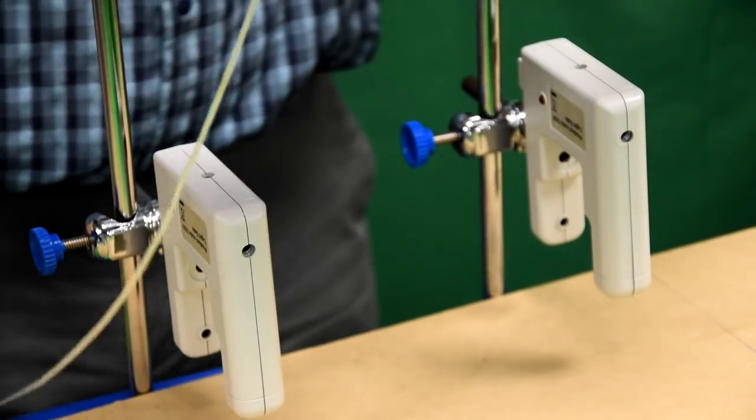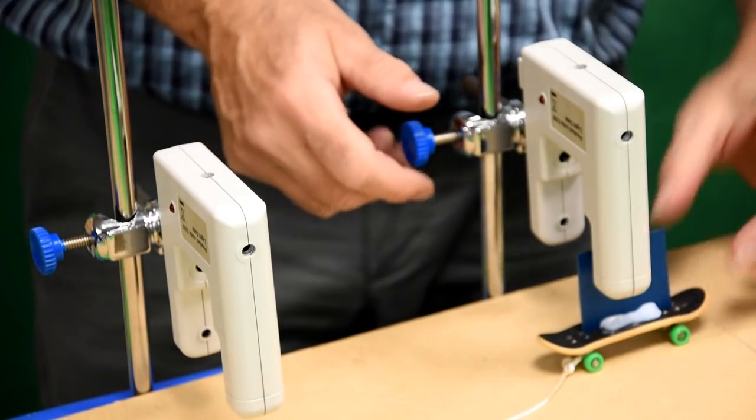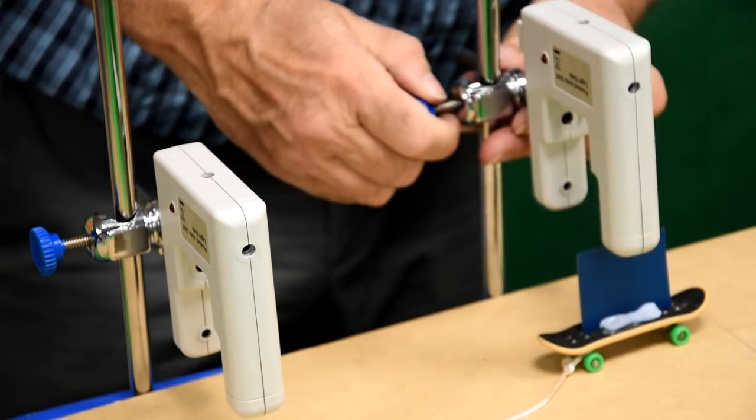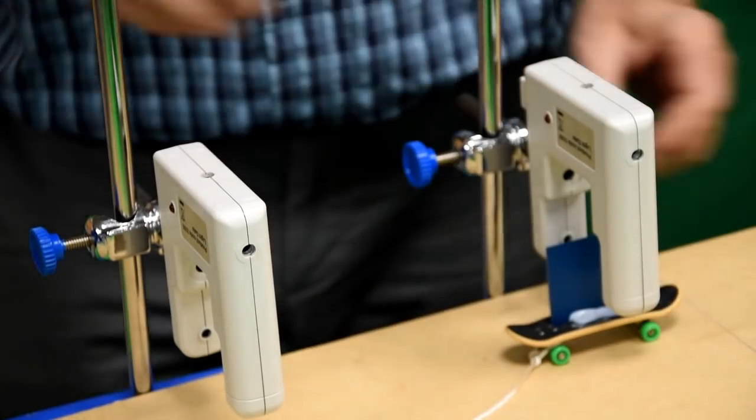This time, we need two light gates, and the card will cut the beam of each, one after the other. The light gates need to be adjusted so that the card does actually cut that beam of light.